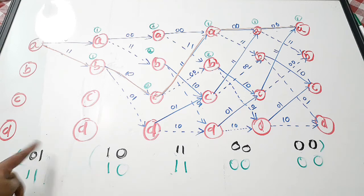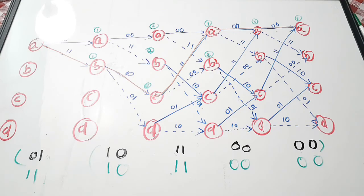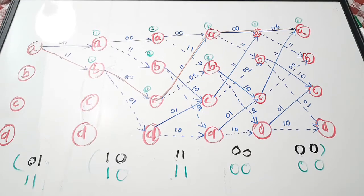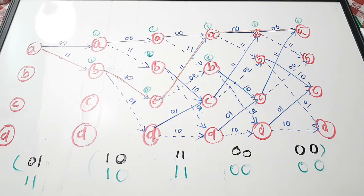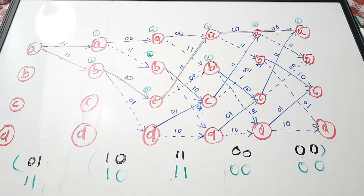You can apply error-correcting methods to correct this one-bit error. This is how you perform the Viterbi algorithm, and it is performed with the help of a Trellis diagram. If you know how to draw a Trellis diagram, it is easy to understand the Viterbi algorithm. I really hope you understood the concept of the Viterbi algorithm and how decoding is done with the help of the Trellis diagram. If yes, please give it a thumbs up, share it with your friends, and subscribe to the channel. Thanks for watching!